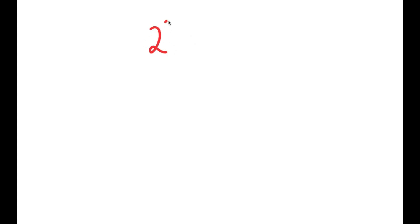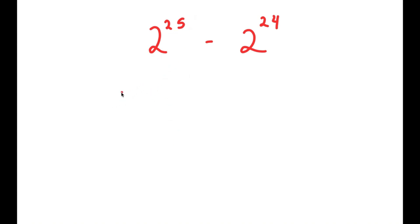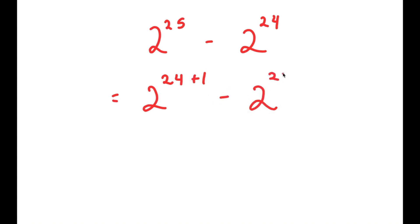In this video I'm going to solve the problem 2 to the power of 25 minus 2 to the power of 24. To solve this I'm going to start by rewriting 2^25 as 2 to the power of 24 plus 1, and I still have this minus 2^24.